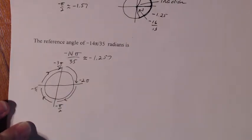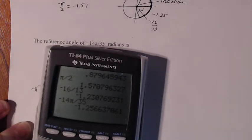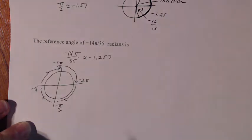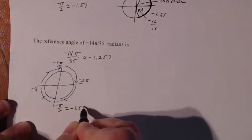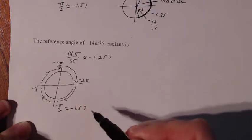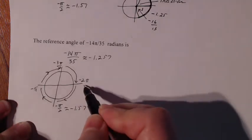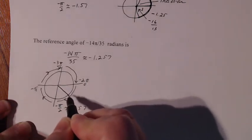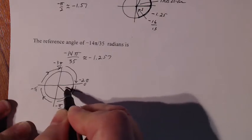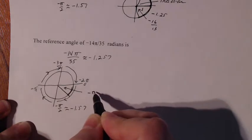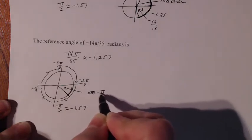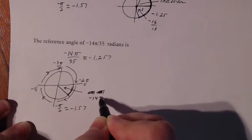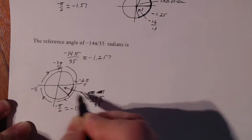So I have approximately negative 1.257. Negative π over 2 is approximately negative 1.57. Since negative 1.257 lies between zero and negative 1.57, that means the angle falls between zero and negative π over 2. So I'll approximate the terminal side to be in that region, and that angle is negative 14π over 35.